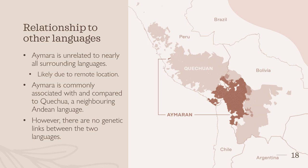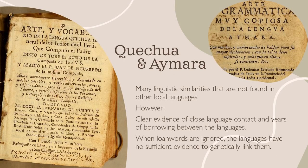Regarding Aymara's relationship to other languages, it is unrelated to nearly all surrounding and far-away languages. This can largely be put down to its remote location in the mountainous region of the Middle Andes. That being said, Aymara is commonly associated with and compared to Quechua, a neighbouring Andean language. Quechua is much bigger than Aymara, with over 7 million speakers across various Latin American countries. However, despite their common association, there are no genetic links between the two languages, and they are in different families. There are many linguistic similarities between the two that are not found in other local languages, but it is hard to ignore the vast evidence of close language contact and years of intense borrowing. When loanwords are ignored, the languages fail to have sufficient evidence to genetically link them, and any links would span too far back to realistically compare them.